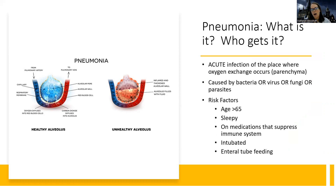Now the bigger topics — pneumonia. Pneumonia is an acute infection of the parenchyma, happening where oxygen exchange occurs, down in the alveoli. It causes difficulty with gas exchange, so we're very concerned about oxygenation. These patients are also at risk for respiratory acidosis because there's poor gas exchange — it's hard to get oxygen in and hard to get CO2 waste gases out.